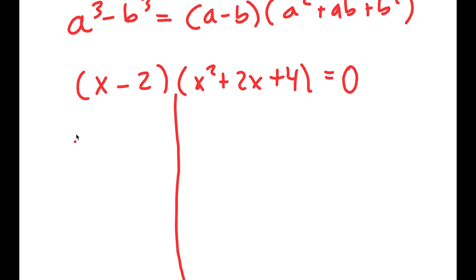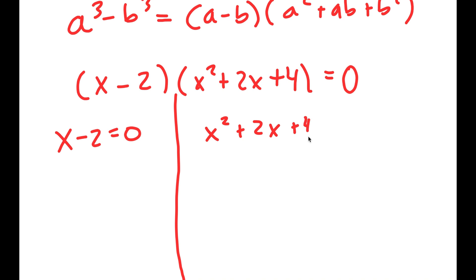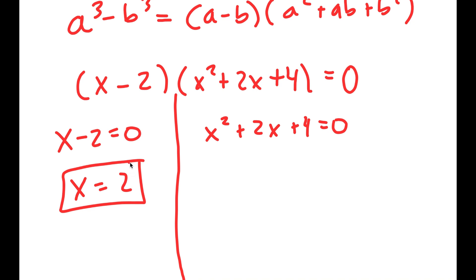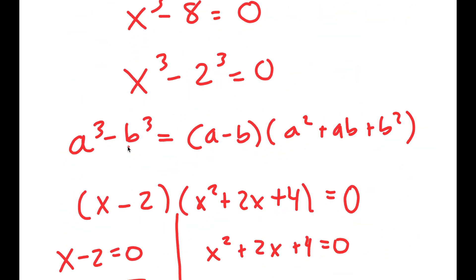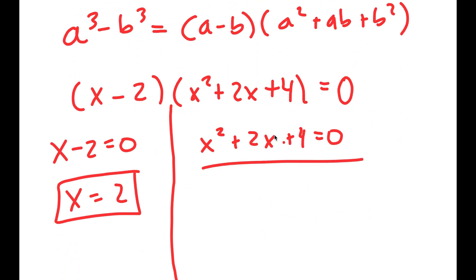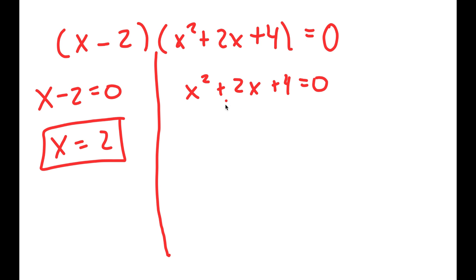Now I get two equations: x minus 2 equals 0, and x squared plus 2x plus 4 equals 0. For x minus 2 equals 0, I get x equals 2, which was the solution we already got. But on top of this, we have a whole other equation with two more solutions because it's a quadratic equation.